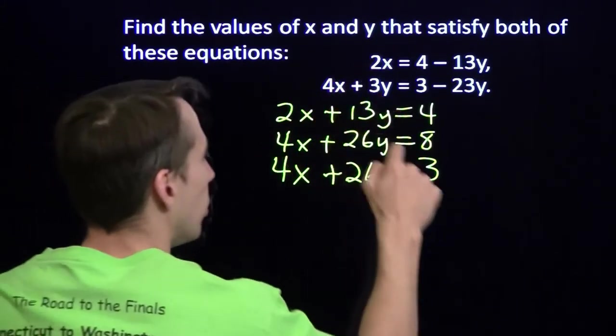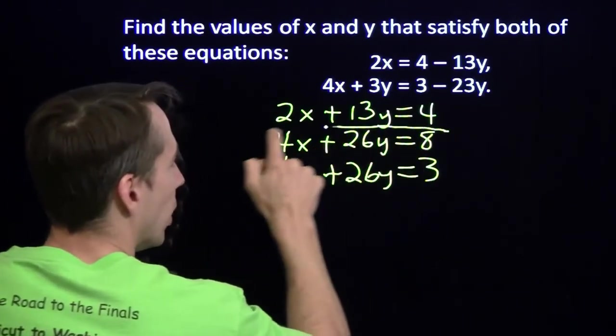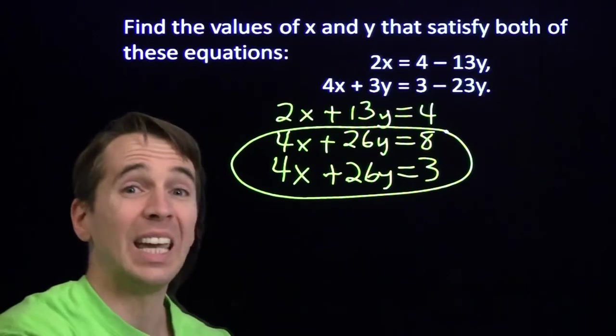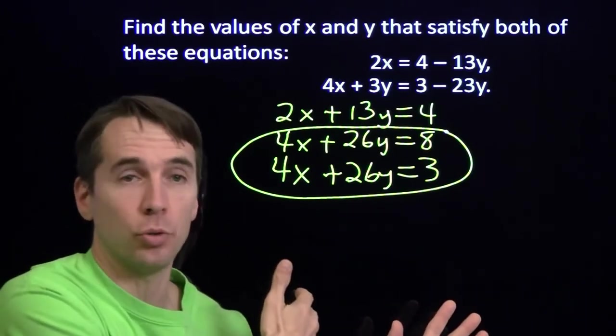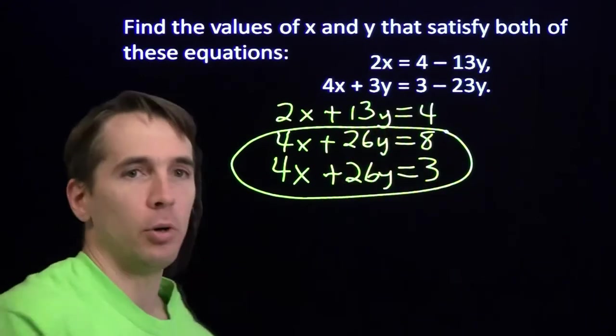And this explains what's going on right here. We can rewrite these two equations as these two equations, let me grab my pen, right here. And these two equations can't ever possibly both be true. Because 4x plus 26y can't be both 8 and 3.